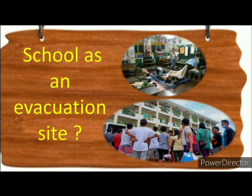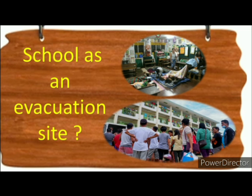School evacuation site: it is a location designated by the formal action of the governing body, superintendent, or a principal of any school — a location to which juveniles are to be evacuated or are to assemble in the event of any emergency or other incident at the school.